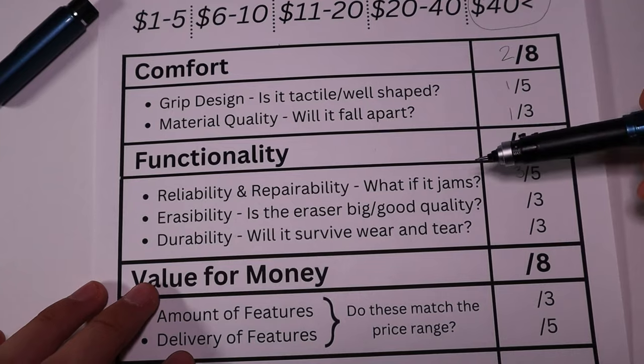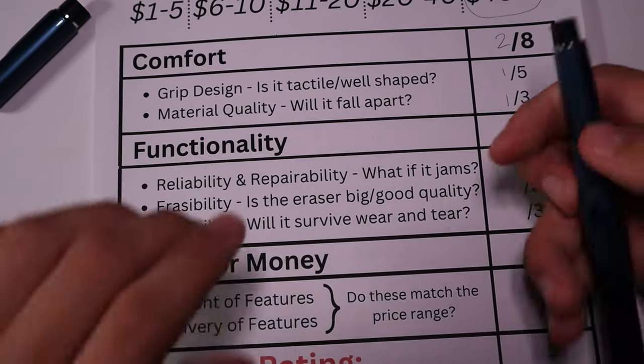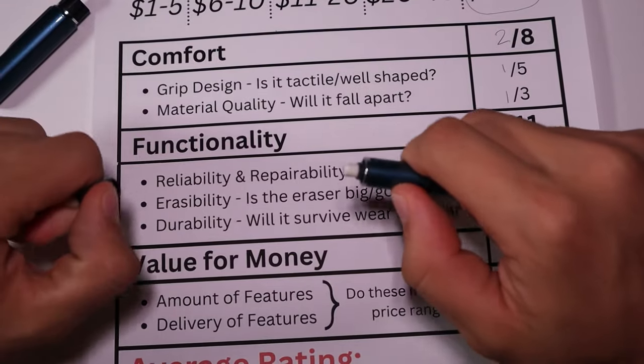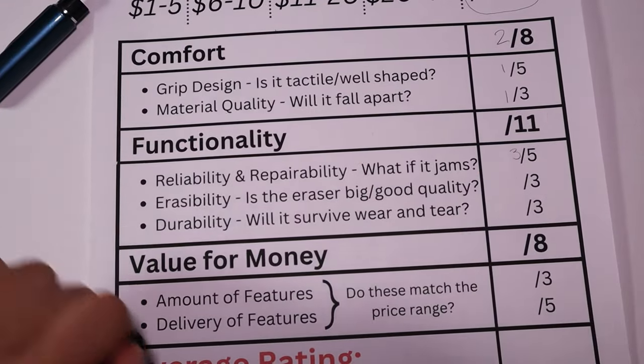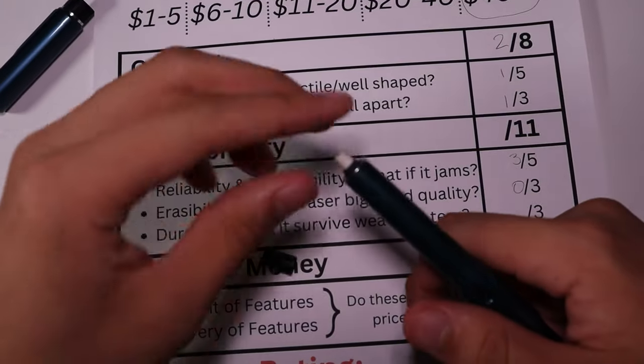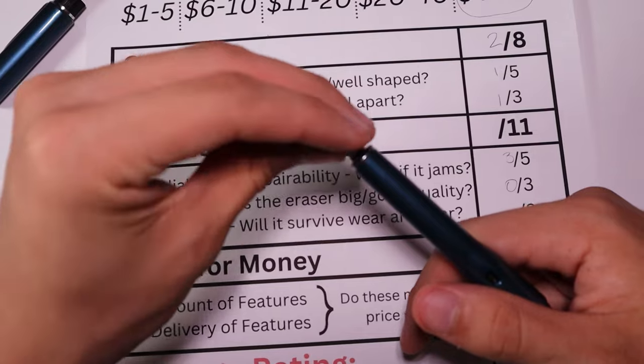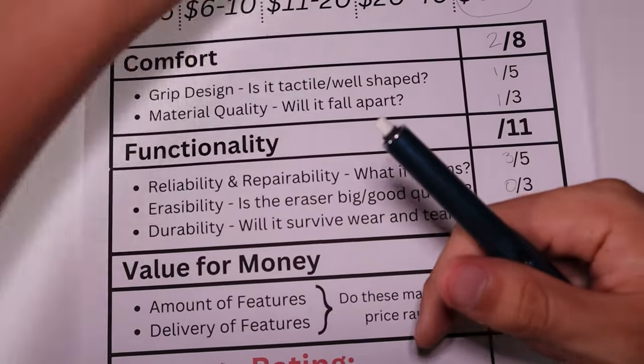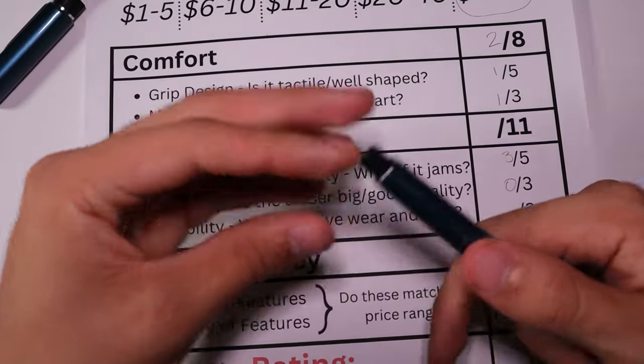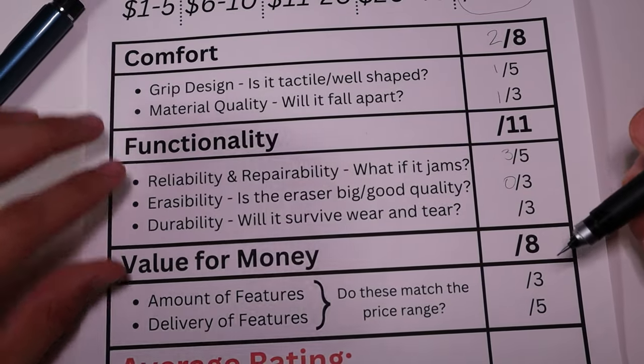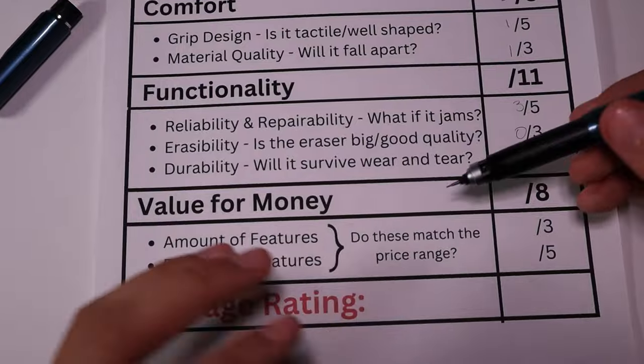We spent a lot of time on functionality so let's go on to erasability. This one will be quick - Uni and decently sized erasers are worst enemies. So it is good quality but it's going to get a zero out of three because this is just awful. Look how tiny this eraser is, this is not going to last you a few words before you run out of eraser.